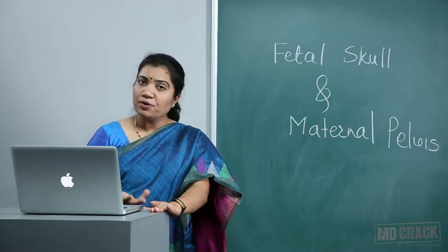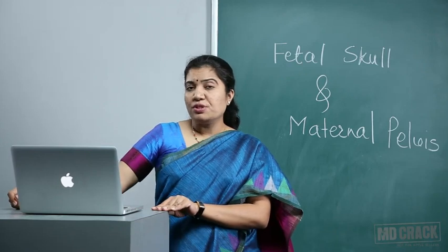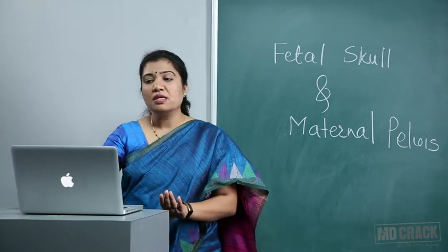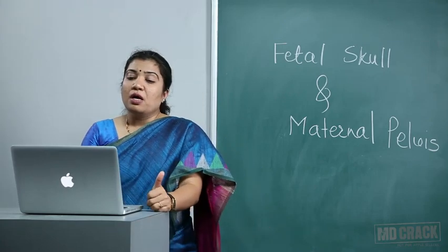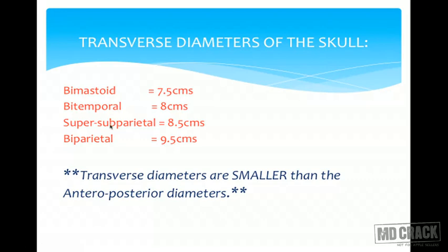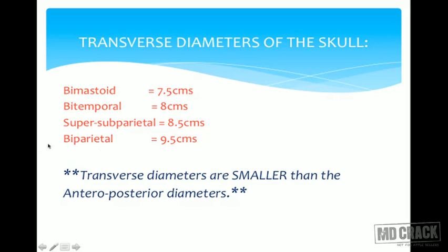Now the transverse diameters of the fetal skull, which are also important. The bimastoid diameter cannot be compressed as it is at the base of the skull; it is 7.5 cm. If pelvic diameters are less than 7.5 cm they cannot accommodate the head. The biparietal diameter is the one commonly involved during labor and measures 9.5 cm. The rule is that transverse diameters are smaller than all anteroposterior diameters, except biparietal which equals suboccipitobregmatic.